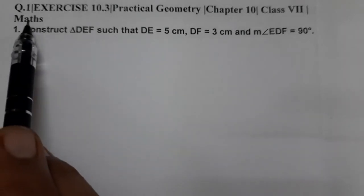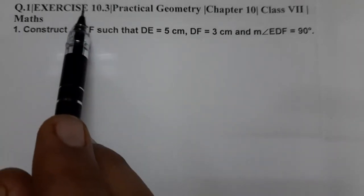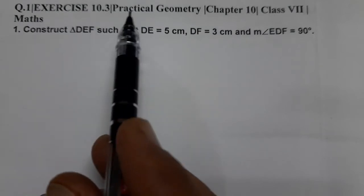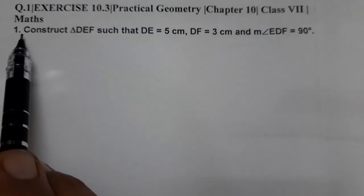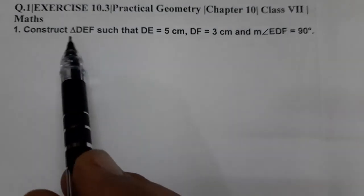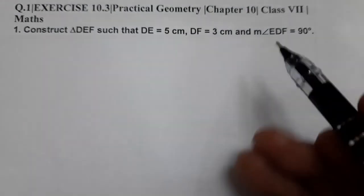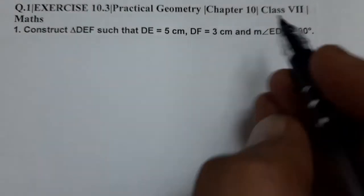Hello students, today we are going to do question number one of exercise 10.3, chapter 10 Practical Geometry, Class VII Maths. Question number one: Construct triangle DEF. So let's make a rough diagram first.